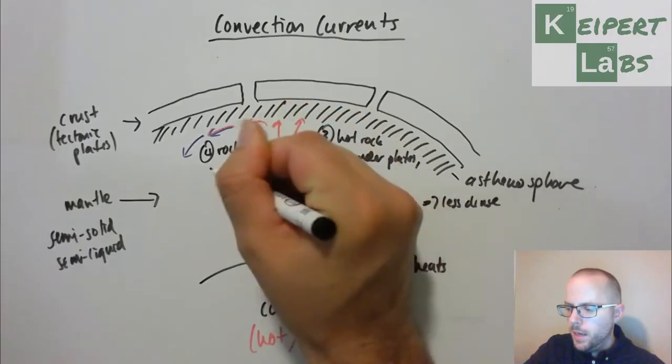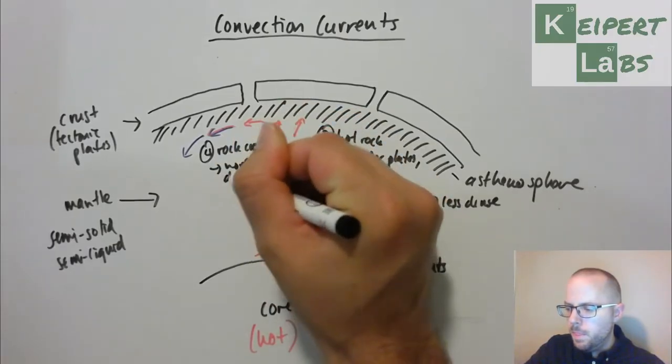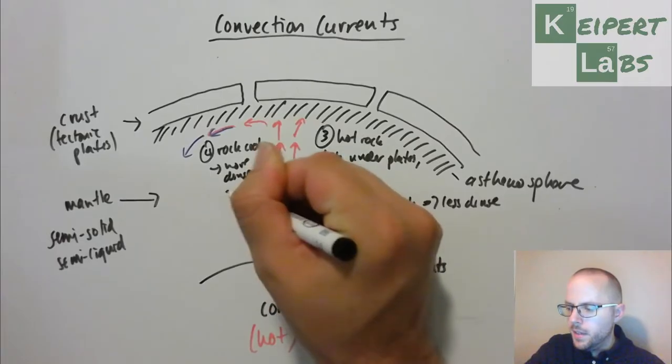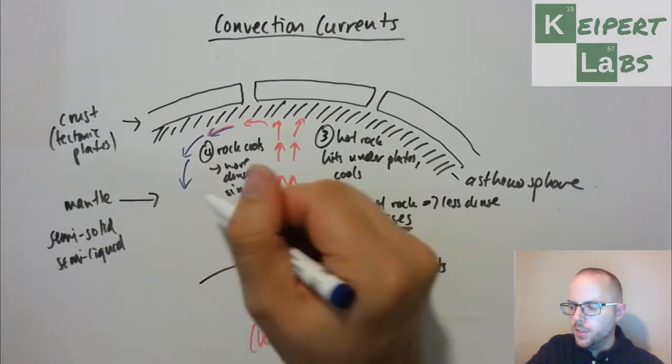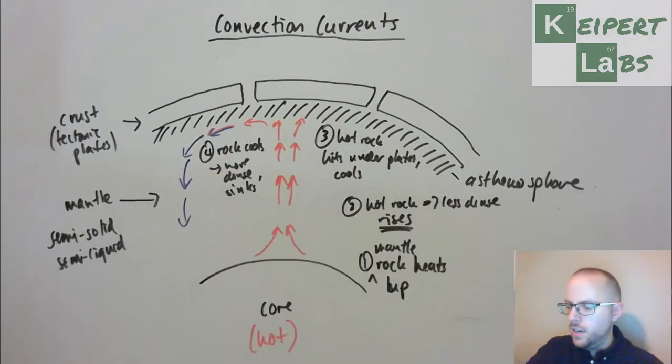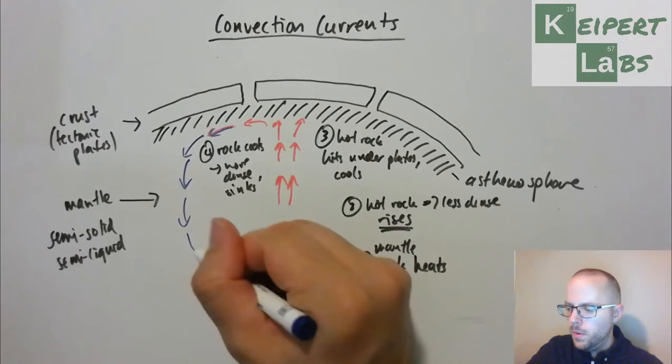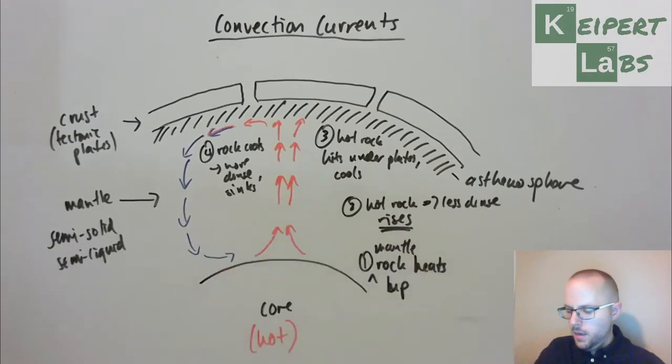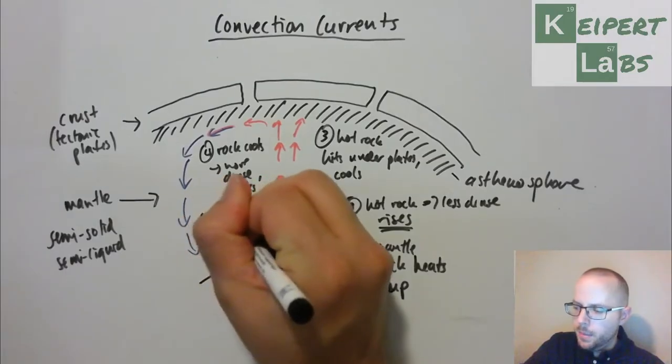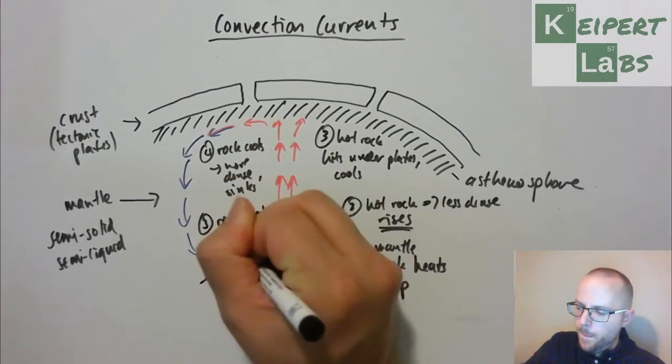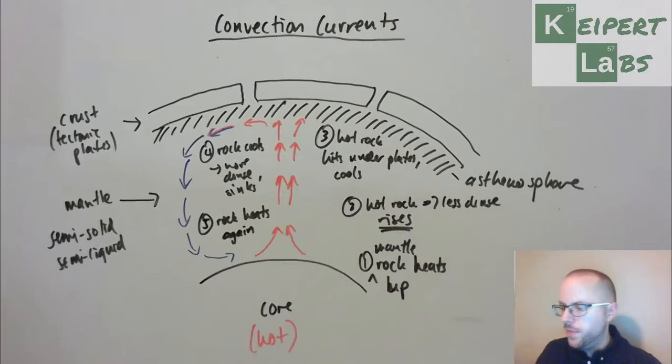The rock cools, becomes more dense, and sinks back down again. So this blue arrow is representing our rock that started to cool down. It sinks back down towards the core, and then the rock heats up again.